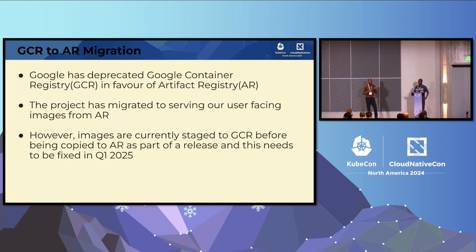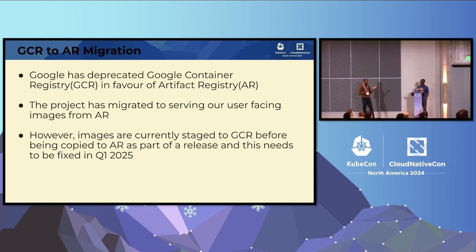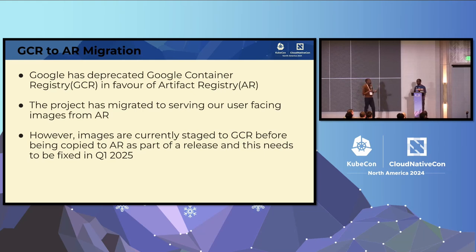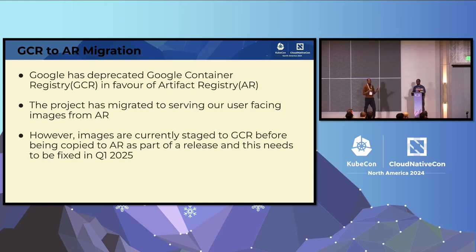The next step for the SIG will be the migration from GCR to Artifact Registry. GCR was the first GCP product to host container images, and now it's being deprecated and will be removed during 2025. One of the first things for the project will be to migrate to Artifact Registry next year so we don't disturb the CI process and the release process. We're slowly pushing all subprojects to migrate to Artifact Registry without putting aggressive pressure on the community.